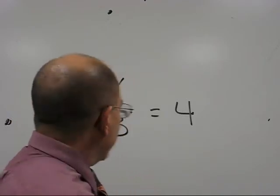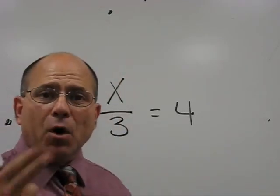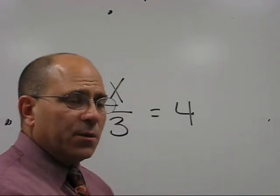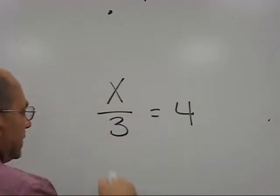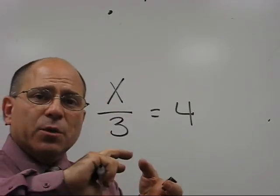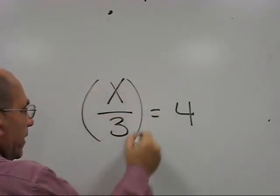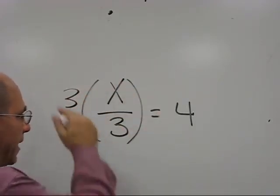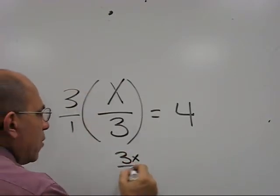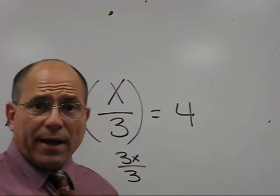In this particular case, because we're dividing, we have to multiply. Basically, what you multiply, in this case, is what's called the reciprocal. The reciprocal is when you flip a fraction upside down. So in this case, since it's 3, we put the 3 on top and put a 1 on the bottom, and this comes out 3x over 3, or 1x.